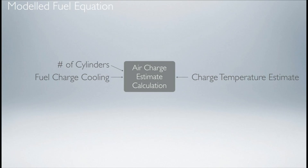The ECU needs to know the number of cylinders the engine has, and also the engine size in cubic centimetres. Another input the ECU uses on the model fuel equation to determine the amount of air coming into the engine is the volumetric efficiency table, or fuel table.